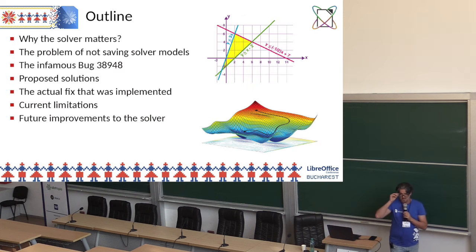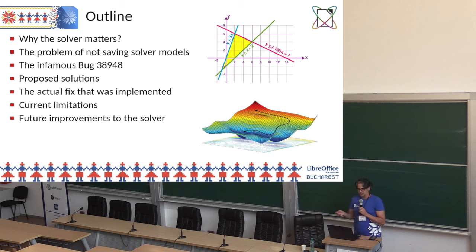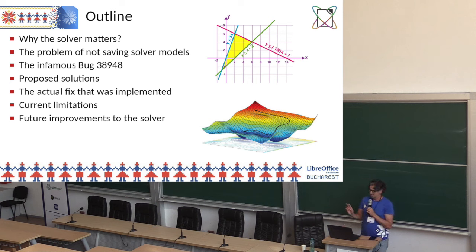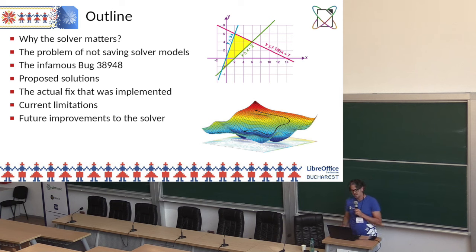Here is an outline of my presentation. First, I will talk about why the solver matters. Then I'll explain the problem with not saving solver models, and address bug 38948, which concentrated the discussions on this issue. I will then discuss ideas I had to fix the problem and describe the actual fix that was implemented. Finally, I will present some limitations and list other improvements I plan to implement.